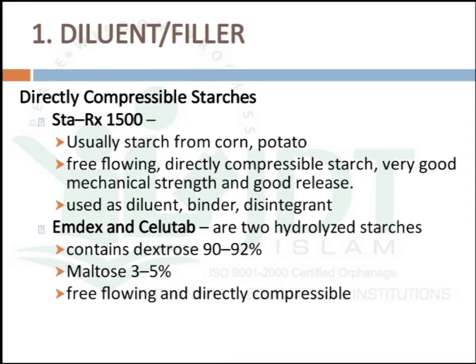Directly compressible starches do not require the addition of binding or granulating agents. An example is Starch RX 1500, which is from corn starch and pregelatinized starch. They are free-flowing, directly compressible, with very good mechanical strength and good release. This material can serve as a diluent, binder, as well as disintegrant, so we can avoid the separate use of binding agents and disintegrants.